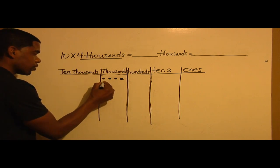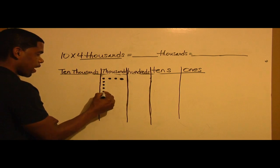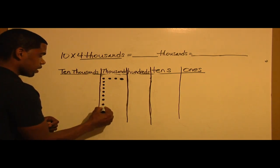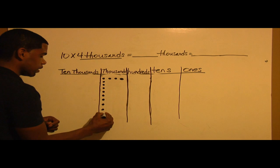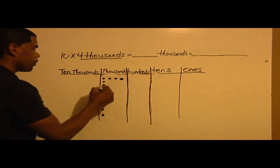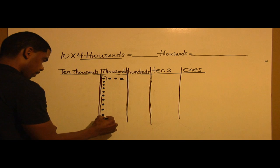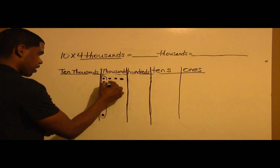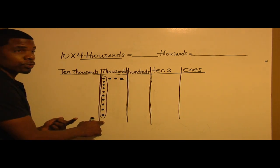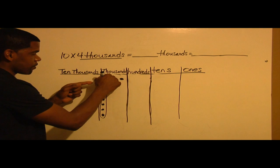1, 2, 3, 4, 5, 6, 7, 8, 9, 10. So within the first thousand, I have 10. I have 10 within the first group, so this would be 10,000.